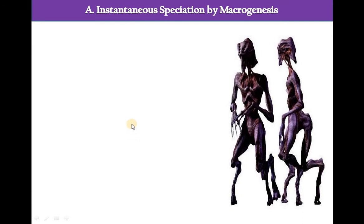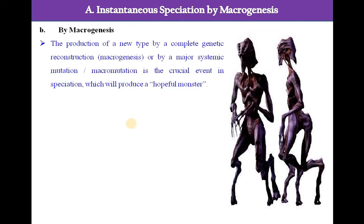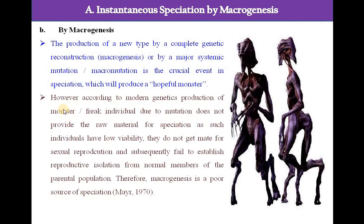The second type of instantaneous speciation is by macrogenesis — the production of a new type by complete genetic reconstruction, also called a major system mutation or macro mutation, which is the crucial event in speciation and will often produce a hopeful monster. However, according to modern genetics, production of monsters or freak individuals due to mutation does not provide raw material for speciation, as such individuals have low viability, do not find mates, and fail to establish reproductive isolation from the parental population. Therefore, macrogenesis is a poor source of speciation.